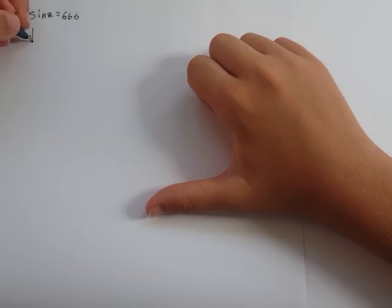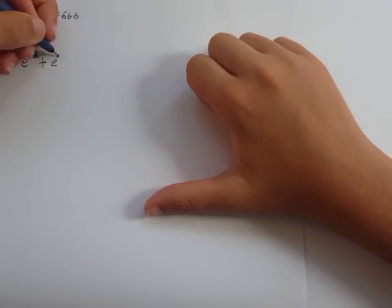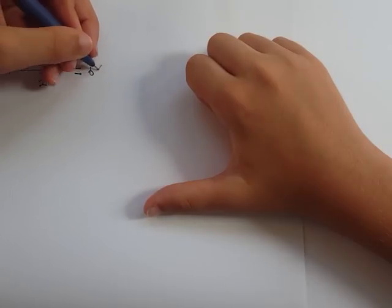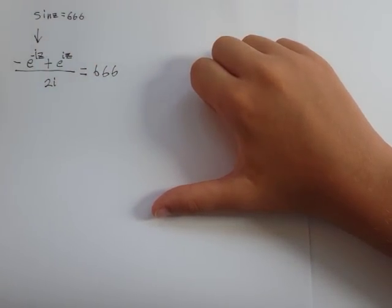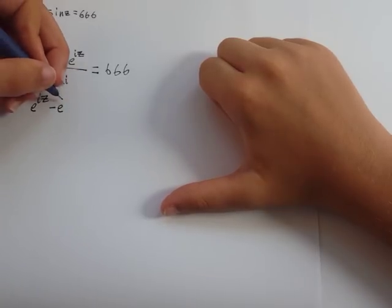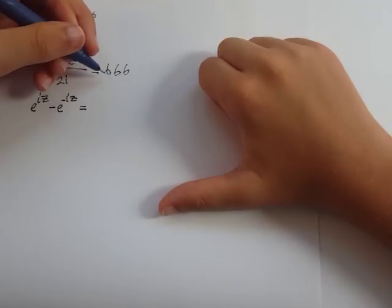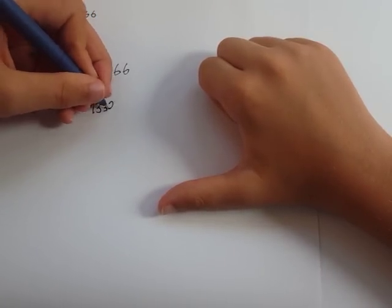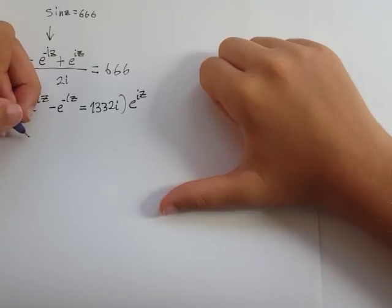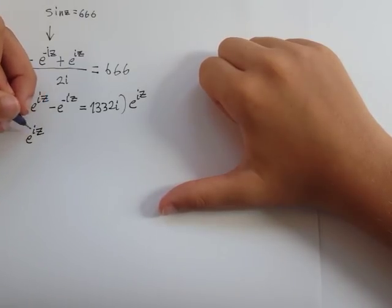So we can rewrite this as e to the negative iz plus e to the iz over 2i equals 666. We move this to the other side and it is this. Then we multiply both sides by e to the iz.